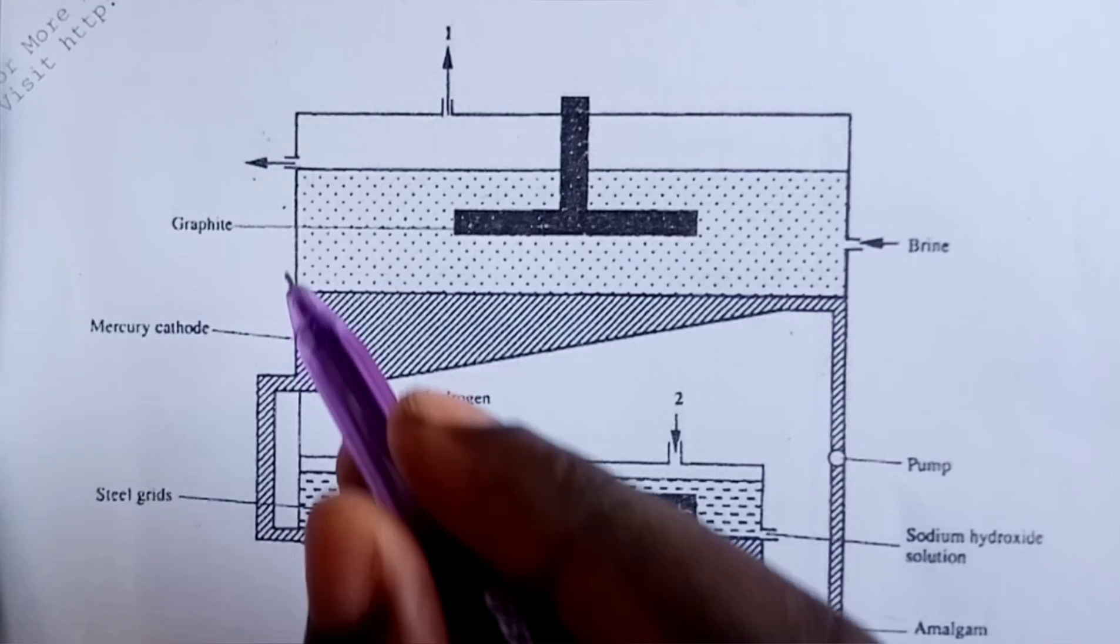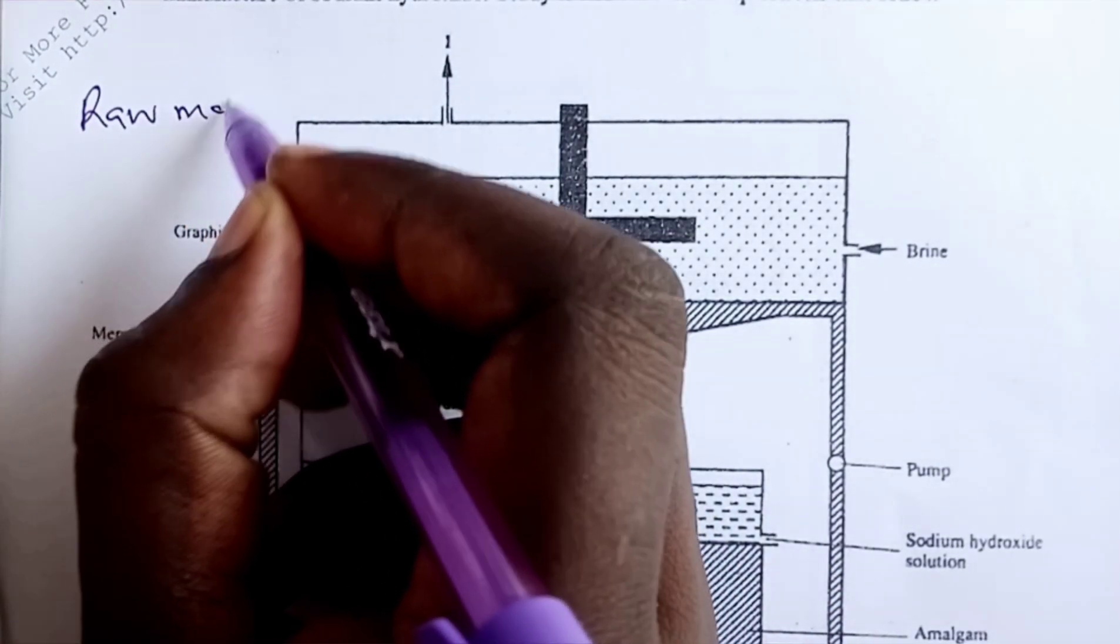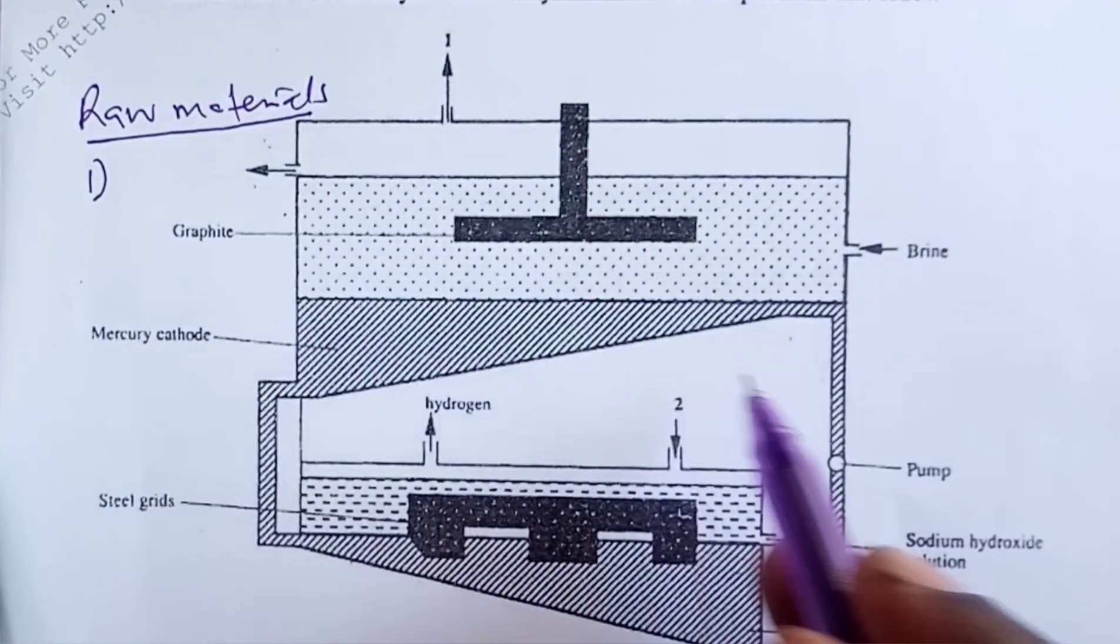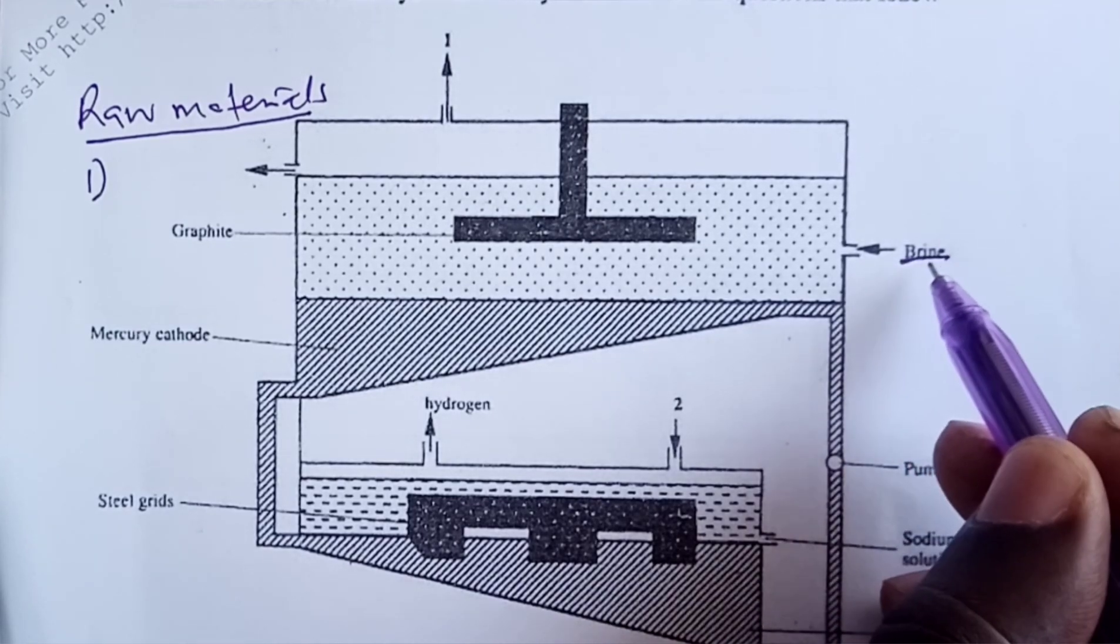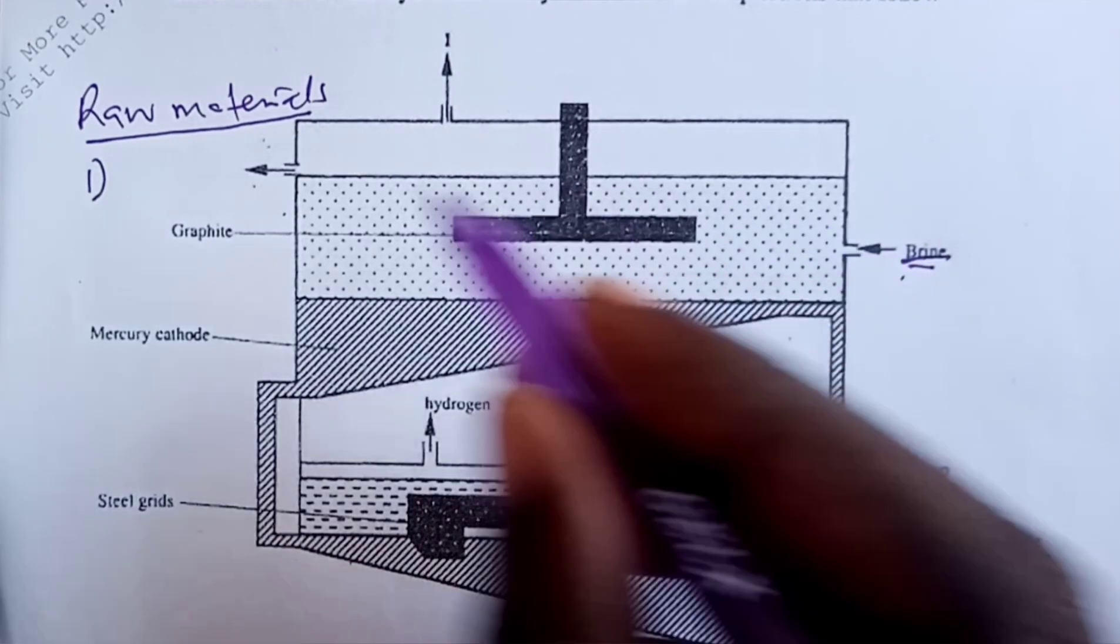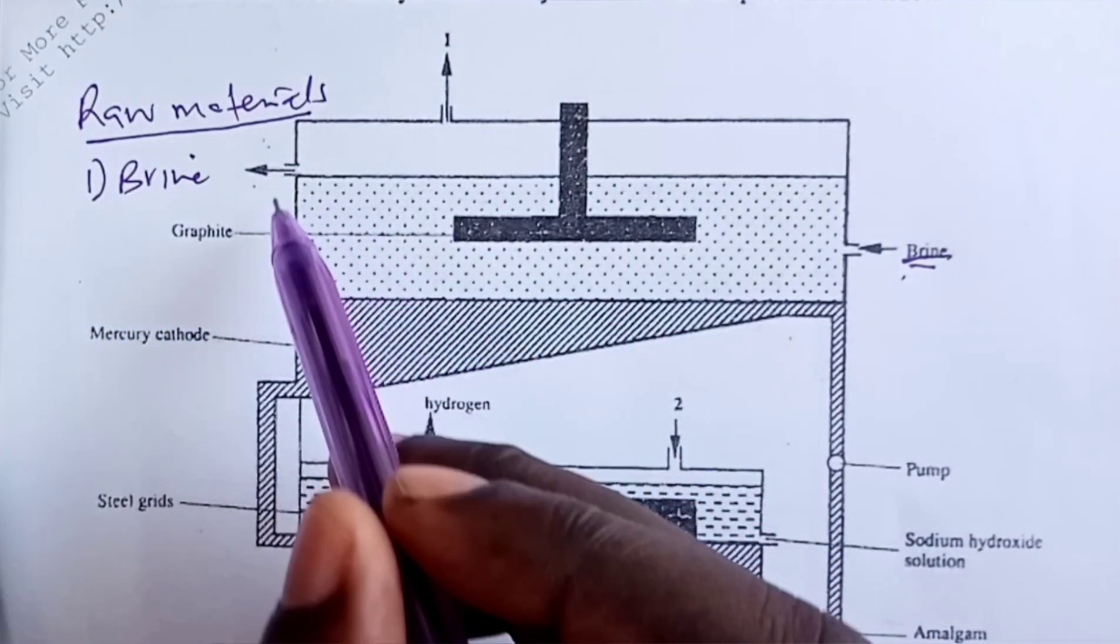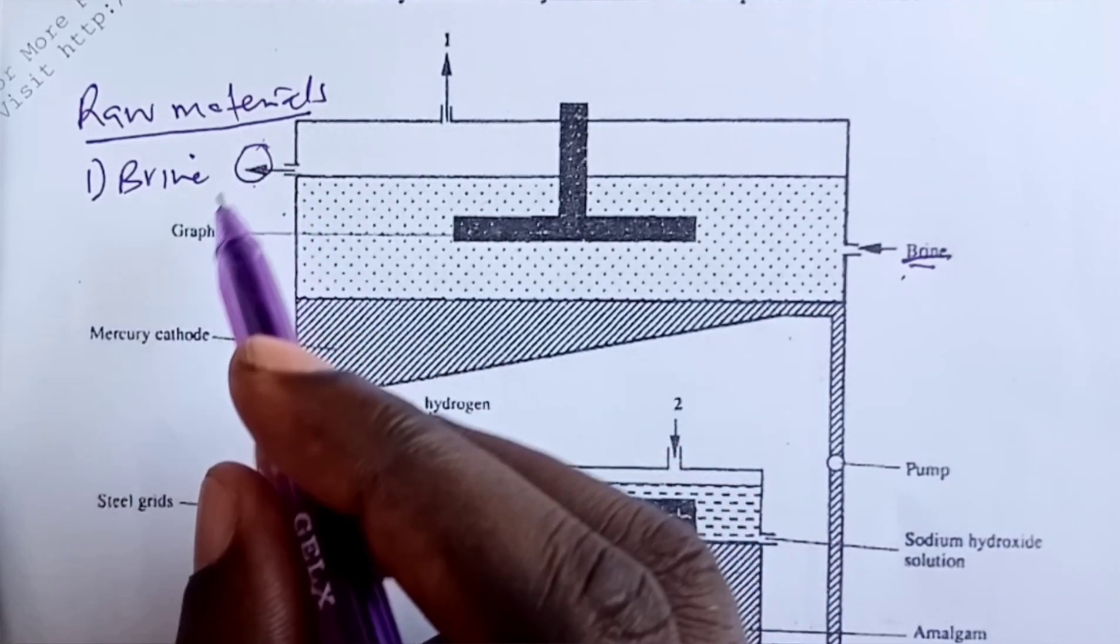We start with the raw materials needed for the cell and here we have two raw materials. In the upper cell we have brine getting in, and then at this point spent brine will finally come out.